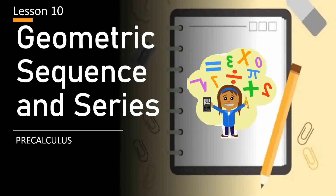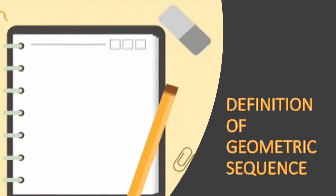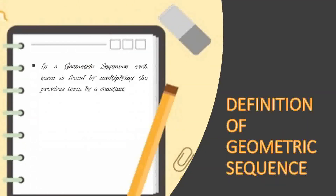In this video, we will talk about Geometric Sequence and Series. In a geometric sequence, each term is found by multiplying the previous term by a constant or a fixed number, which is also known as the common ratio.